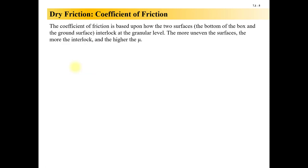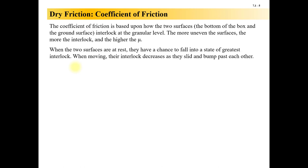And that's based on how the two surfaces, meaning the bottom of the box and the top of the ground surface, how they interlock at the granular level, like saw teeth, grinding against each other, fitting into grooves like puzzles. The more uneven the surfaces, the more they interlock, the higher the mu. When the two surfaces are at rest, that box has the opportunity to settle down into the grooves more and it locks in more. And that's why the coefficient of static friction is high, higher than the coefficient of kinetic friction. That's why it's harder to get a box started moving than to keep it moving.